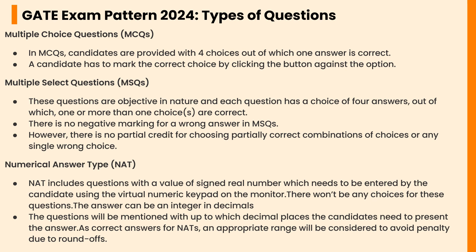In Multiple Select Questions, each question has four answer choices out of which one or more than one choices are correct. There is no negative marking for a wrong answer in MSQs; however, there is no partial credit for choosing a partially correct combination of choices or any single wrong choice.